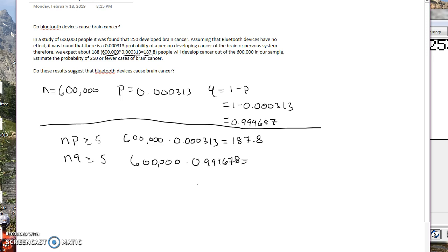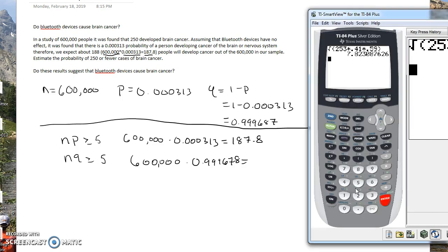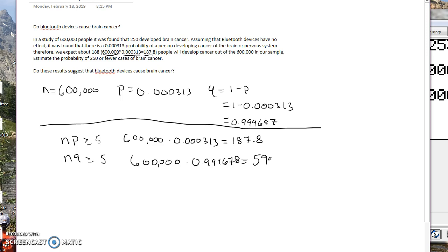And then I'm going to do 600,000 times 0.999678. So let's do 600,000 times 0.000313. And that gives us 187.8. Oh, I'm sorry. I just did that one. Now we're going to do 600,000 times 0.999687. And that one gives us 599812.2. And these are both bigger than 5.